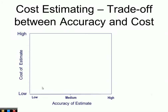It's important to understand the trade-off between accuracy and cost of estimation. The cost of an estimate can be very low, but then accuracy is also low. When we want medium accuracy, we can achieve it at a relatively low cost. But high accuracy estimates require high costs because you need a detailed design for the project.